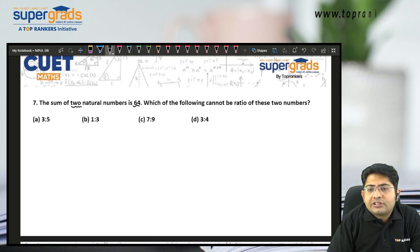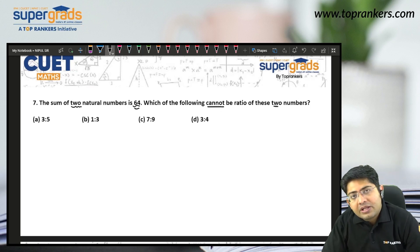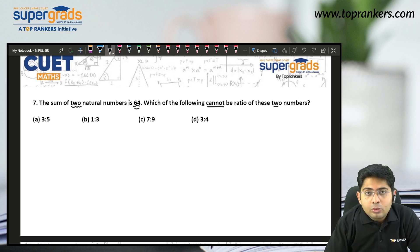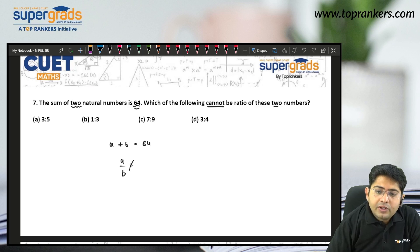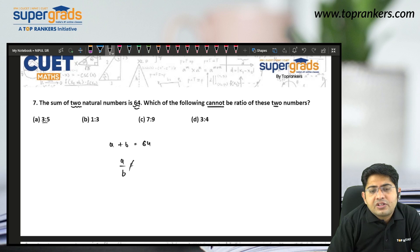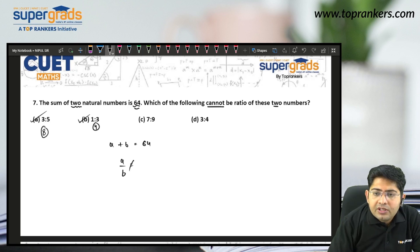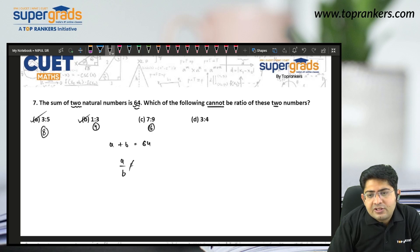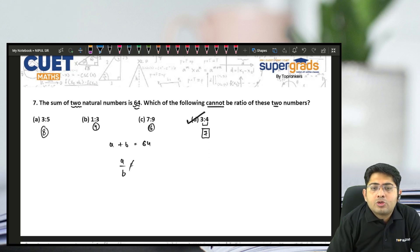The sum of two natural numbers is 64. Which of the following cannot be the ratio of these two numbers? If the sum of the ratio parts is a factor of 64, then the numbers are natural. For option B, the sum of ratio parts is 4, and 64 is a multiple of 4. For option C, 9 plus 7 is 16, and 64 is a multiple of 16. For option D, 3 plus 4 equals 7, but 7 is not a factor of 64. So D, which is 3 is to 4, cannot be the ratio.